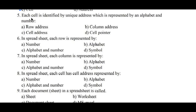Question number 5: Each cell is identified by a unique address which is represented by an alphabet and number. Option A: row, B: column address, C: cell address, D: cell pointer. Option C, cell address, is the correct answer.